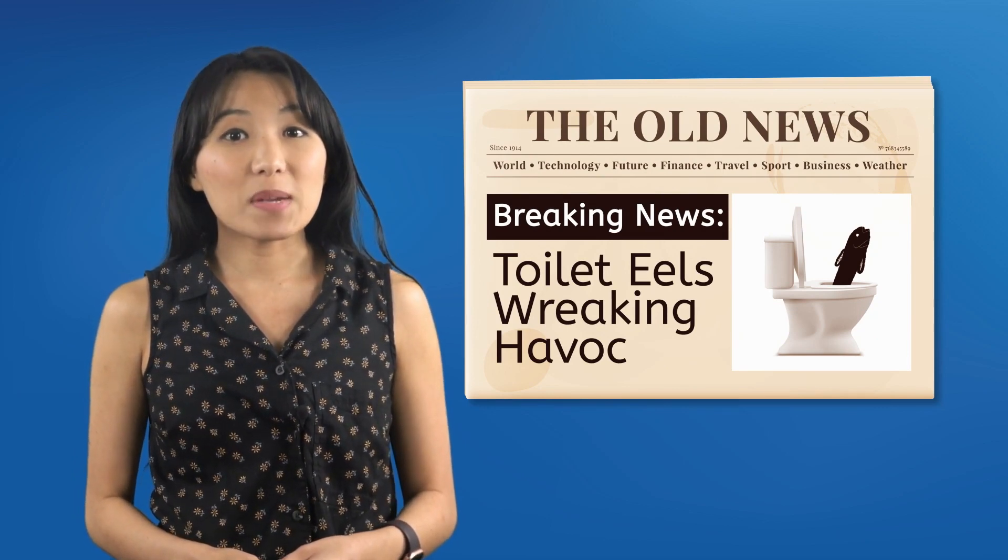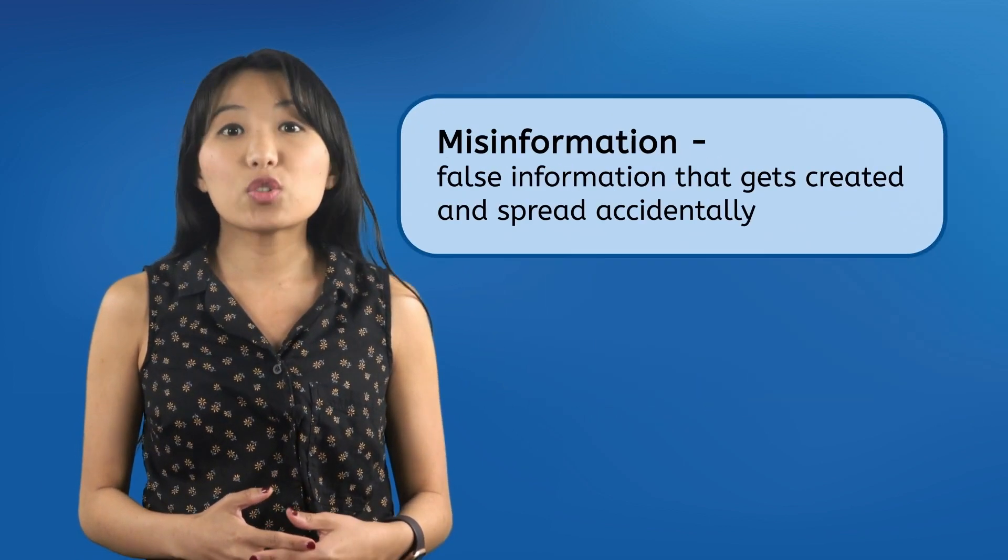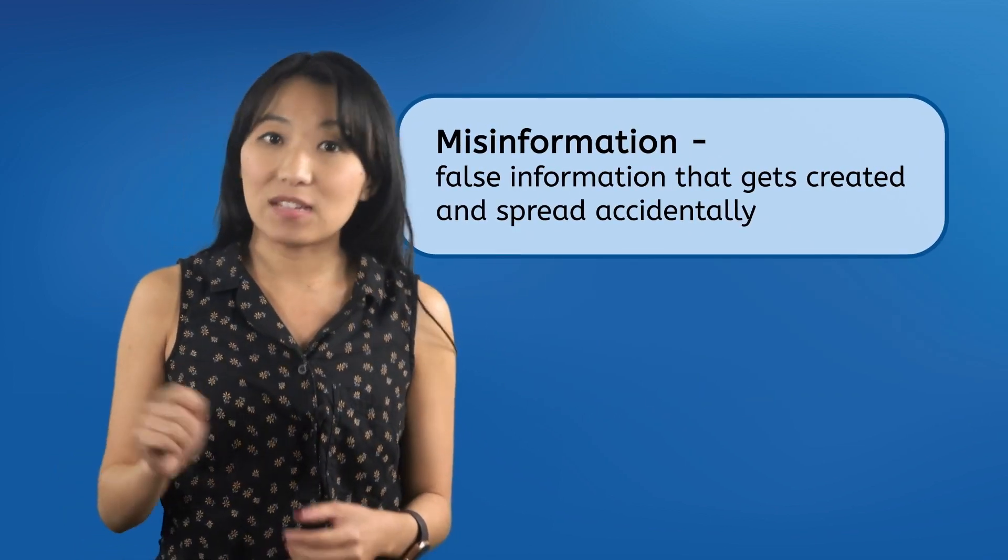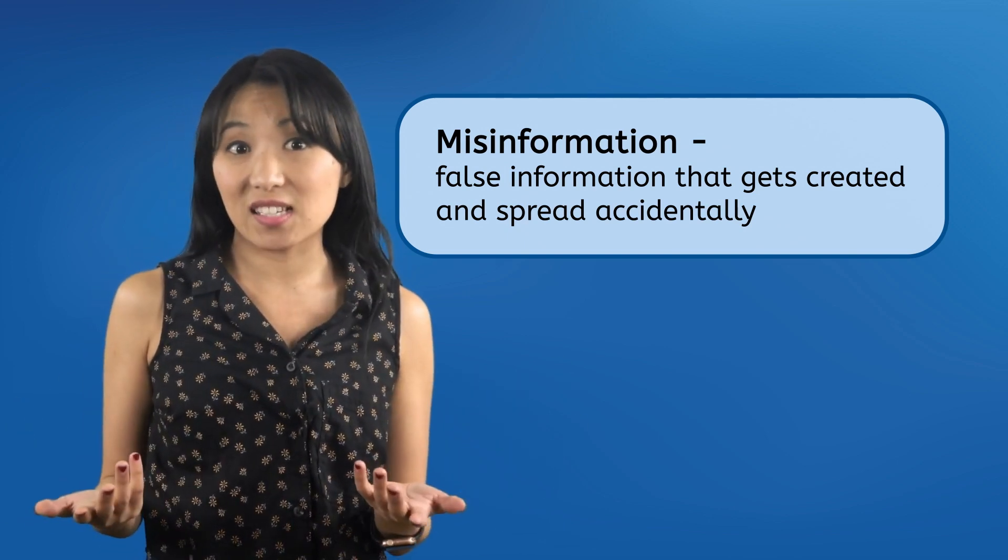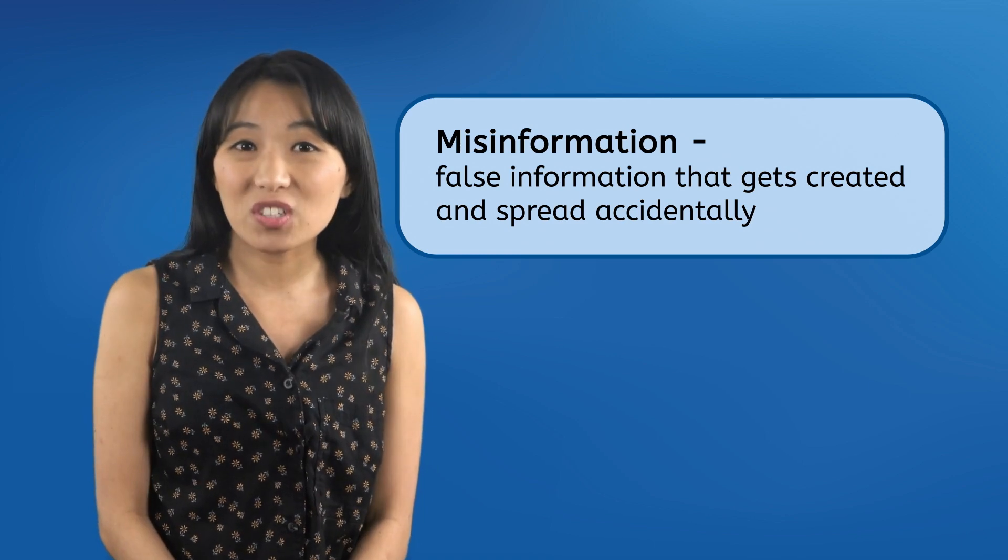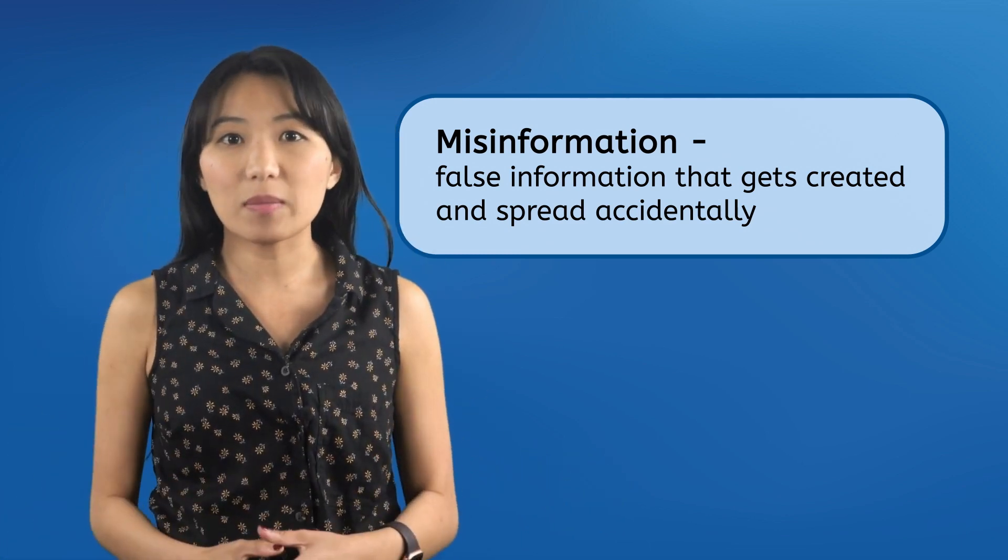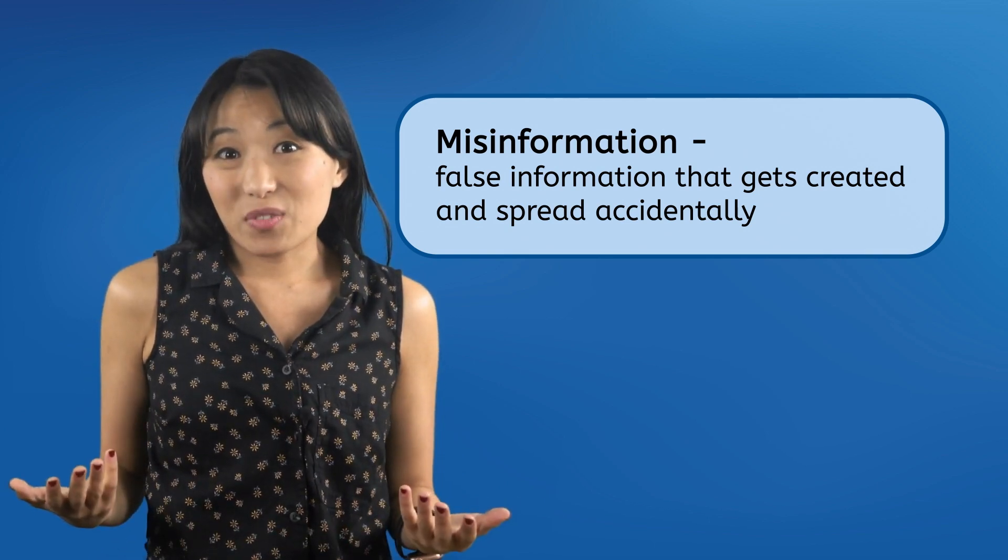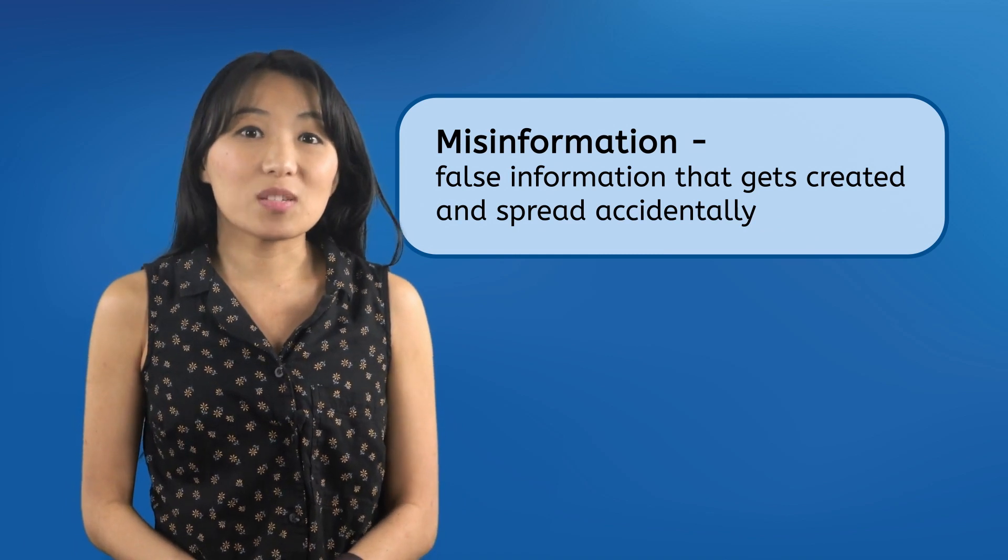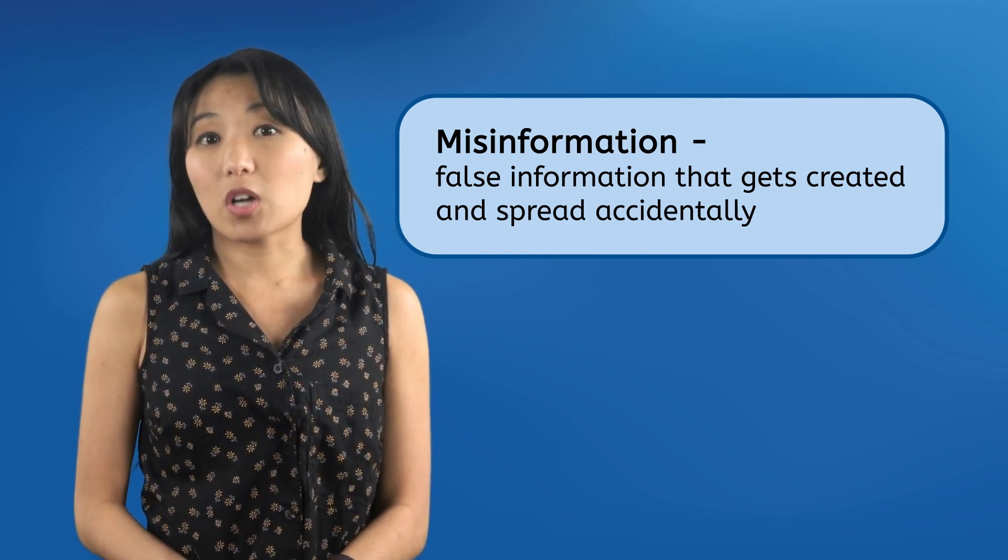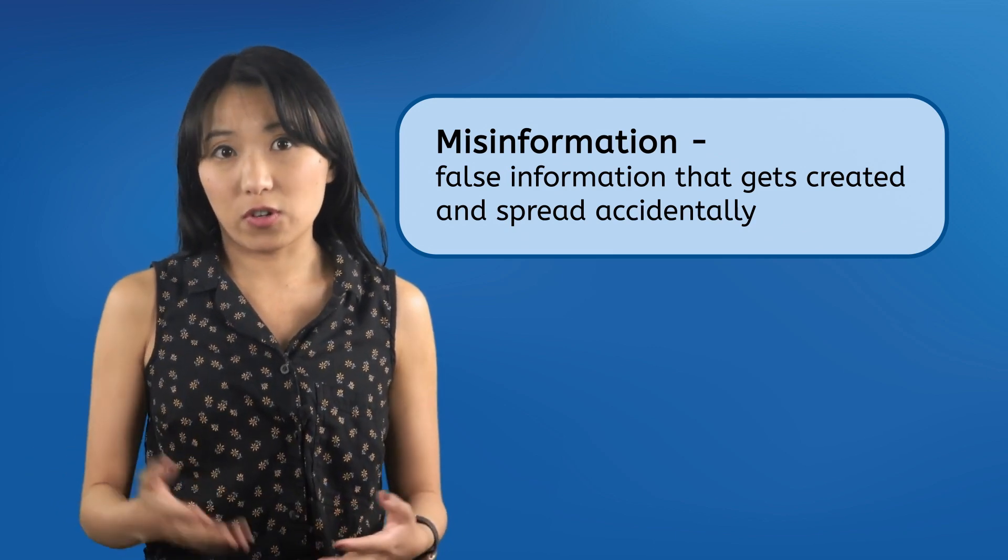The reason we specified that disinformation is intentionally created and spread is to separate it from misinformation, which is false information that gets created and spread completely on accident. It's not an attempt at deception or manipulation or sowing chaos among the masses. Somebody just shared information they thought was true, but it wasn't. Misinformation is more innocent than disinformation, but it's also much more common, and it can be just as troublesome when you're searching for information online.